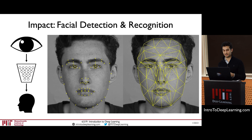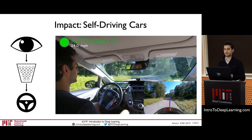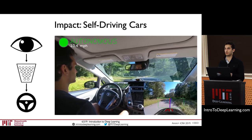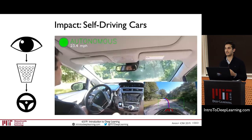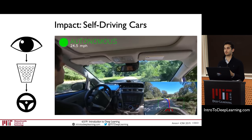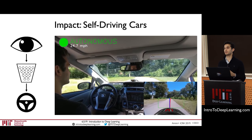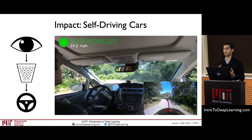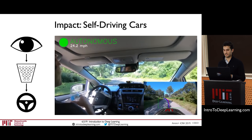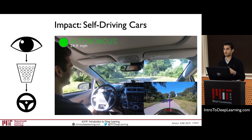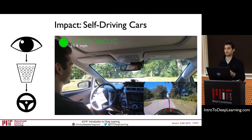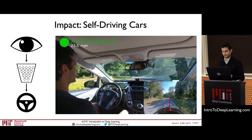We can perform facial detection as the end task, but equivalently that end task could be in the context of autonomous driving — taking an image as input and learning to directly predict the steering control output. The entire control system of this vehicle is a single neural network learned entirely from data, end-to-end. This is very different from most self-driving car companies like Waymo and Tesla. This is one of the autonomous vehicles we've been building in our lab at CSAIL.